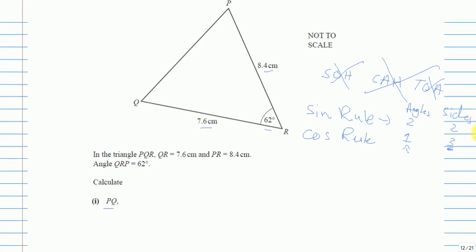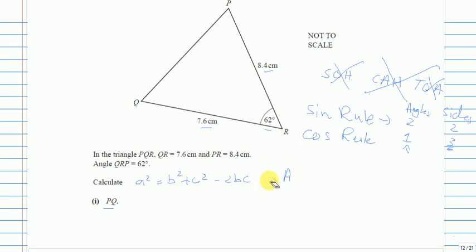The cosine rule is: a² = b² + c² − 2bc·cos(A). Let me write that clearly: a squared equals b squared plus c squared minus two bc cos A.